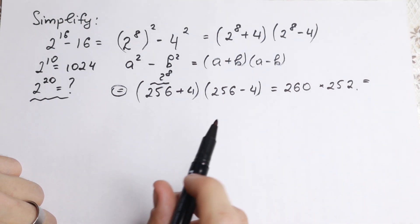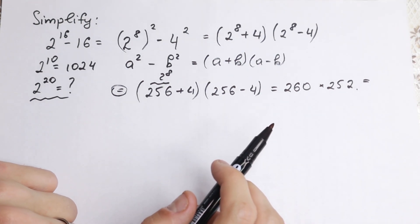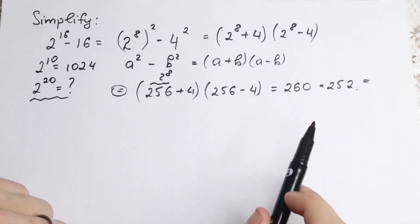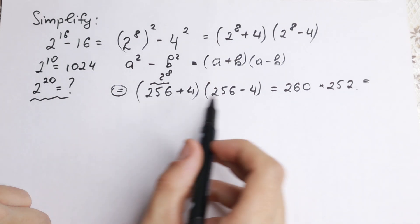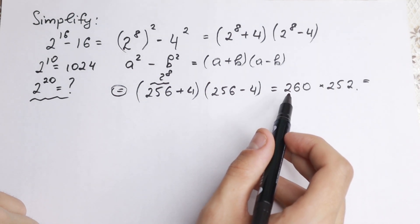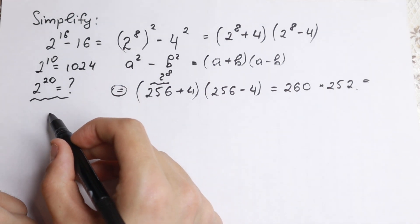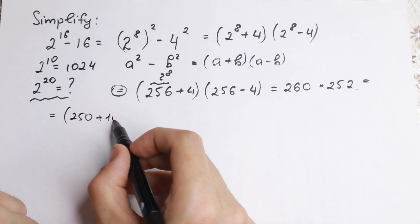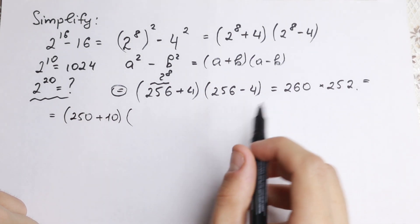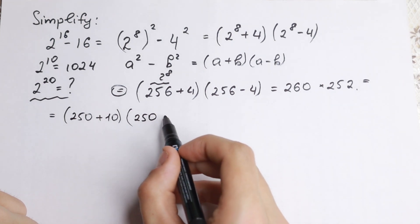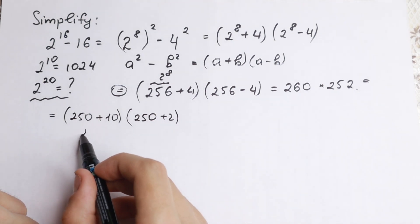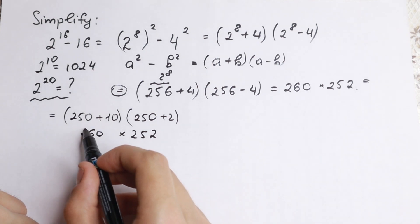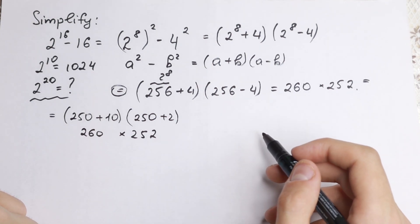And we don't need to use our telephone, our calculator, because I want to show you a really good trick. How can we multiply it without any telephone right here? So 260, let's write it as 250 plus 10. And second parentheses as 250 plus 2. This is our 260. We multiply it by 252. So nothing changed, but I want to write it as parentheses.